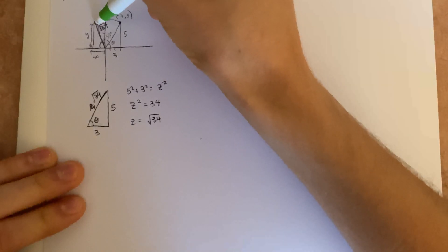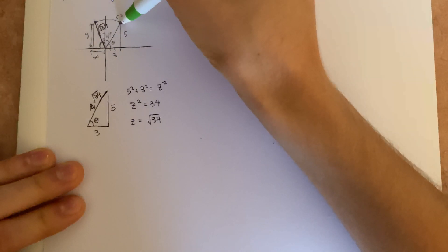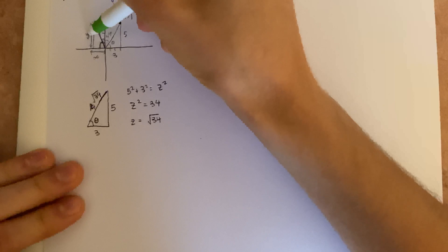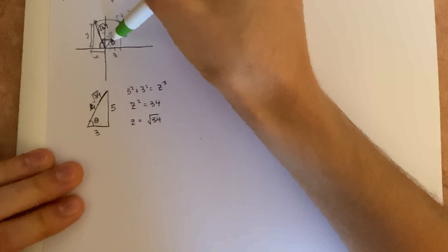So that means this length right over here is also the square root of 34, because it's unchanged when we rotate it. But we need to know this angle to use some trigonometry to solve for y and x. Because we know this one is 45 degrees.